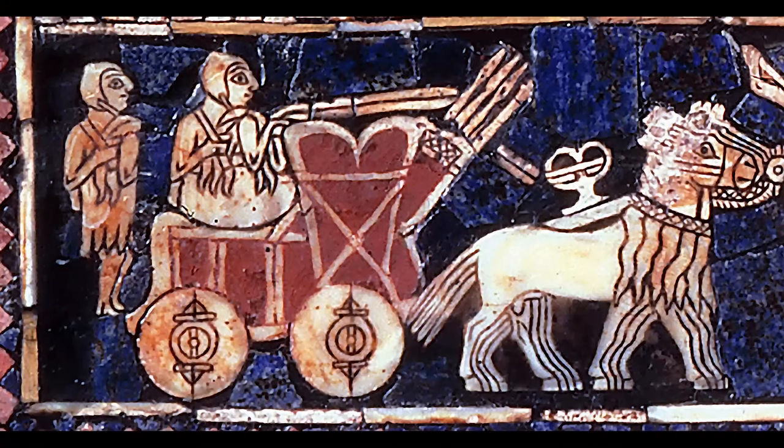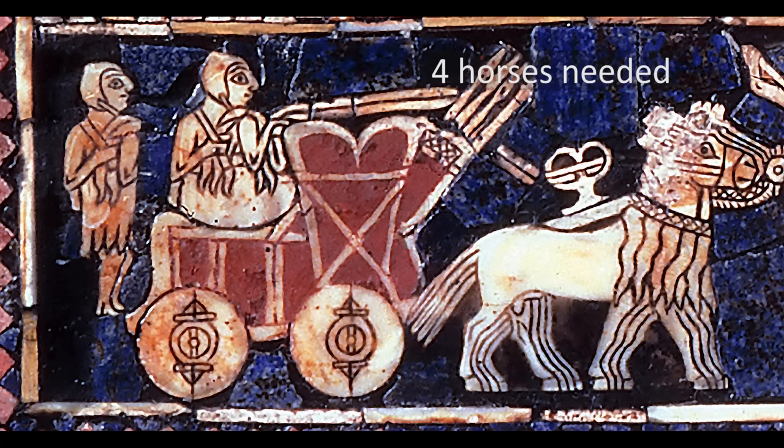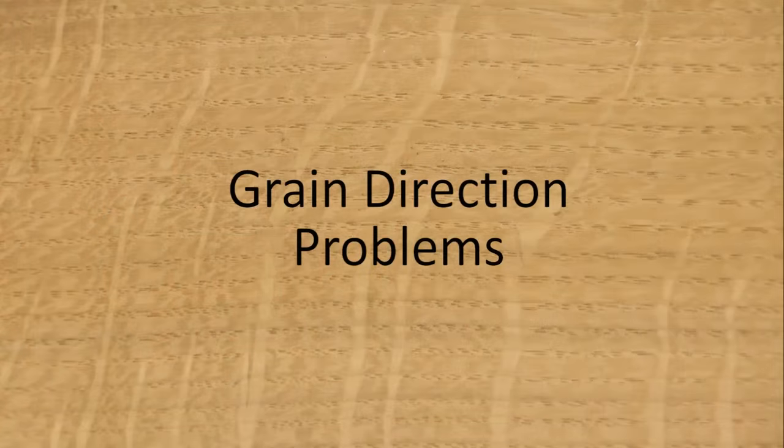However, please note that these are not chariots. They are primitive farm wagons that could not be steered. Let me say that again. No steering. The team had to drag the wagon around tight turns, making the wheels skid sideways. How durable do you think those wheels were? How awkward were they? How fast could it go?